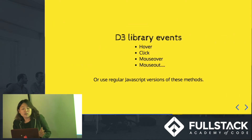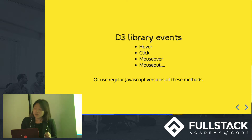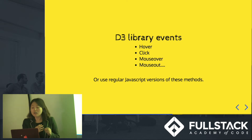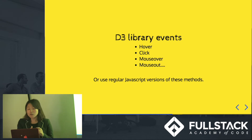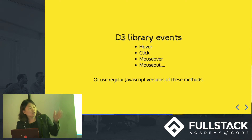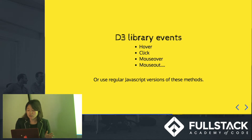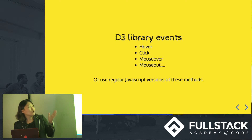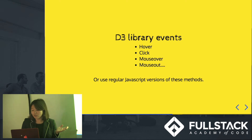Now I'm going to talk about adding interactions to our selection. There are handy built-in D3 JavaScript events in the library, such as hover, click, mouse over, and mouse out. If you weren't using these, you'd have to write JavaScript event capturing functions such as 'on', and then wrap those events and bind data in an anonymous function. Or you can just use these built-in functions — very straightforward.